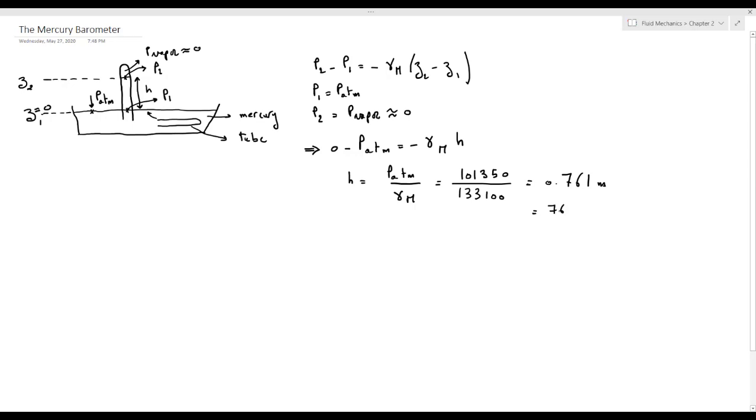Now let's see what happens if we use water instead of mercury. Gamma water is rho water times G. If we take rho water as 1000, we obtain gamma water as 9810 newton per meter cubed.